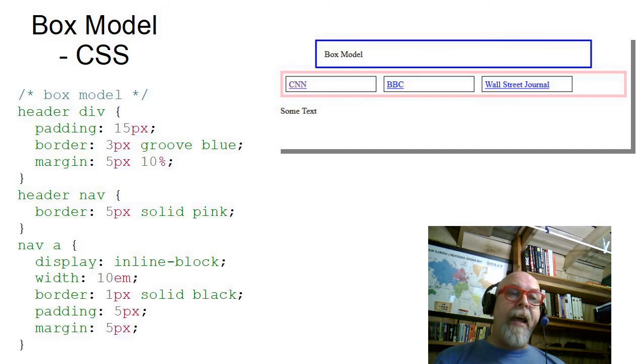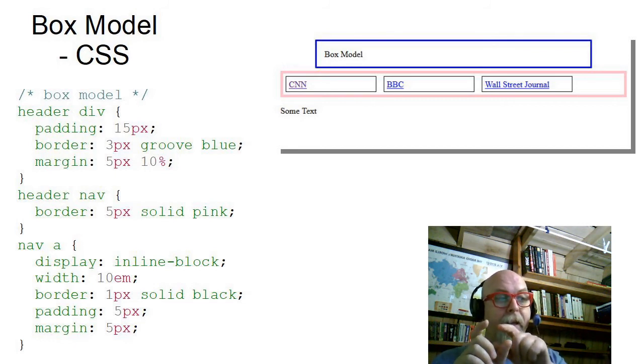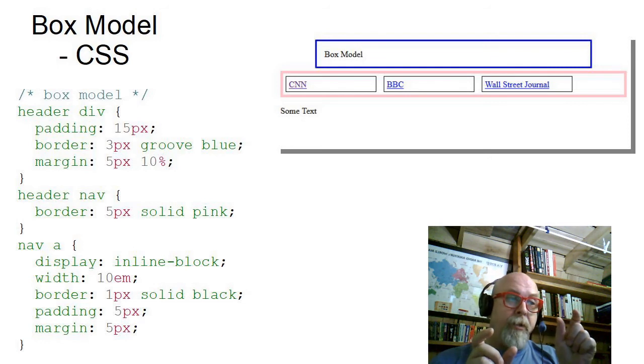And then look at the nav A. So that's all of the A tags within the nav. And I've said, okay, we'll display those as inline blocks. So they're inline, but they have width and height and stuff. I set their widths to 10 EM so that every box is the width of approximately the content inside is approximately the width of 10 capital letters M. Well, notice the Wall Street Journal is a whole lot more than 10 letters in length, but it fits because the width is 10 EM and M's are big fat letters, wide letters.